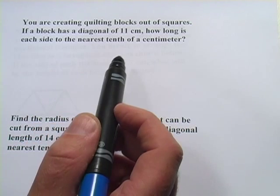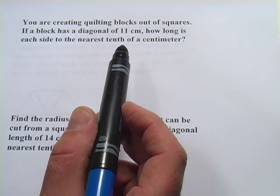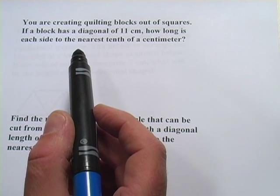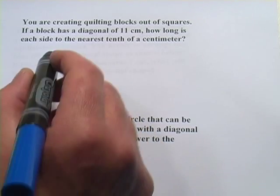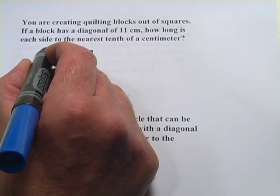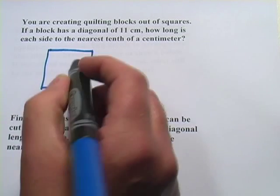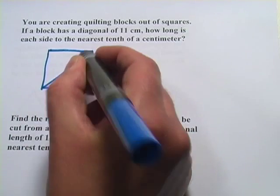It says you are creating quilting blocks out of squares. If a block has a diagonal of 11 centimeters, how long is each side to the nearest tenth of a centimeter? So we've got a square here. And the first thing you should know about squares is that all the sides are the same. And then we've got a diagonal that they've told us is 11 centimeters.